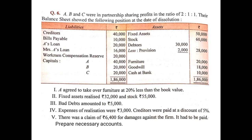Point two: fixed assets realized 32,000 and stock 55,000. When any asset is sold, the amount realized is shown on the credit side of the realization account. So we write: by bank account (fixed assets) 32,000 and by bank account (stock) 55,000. Or you can club the amounts — write by bank account and show 32,000 + 55,000 together in brackets as assets realized.